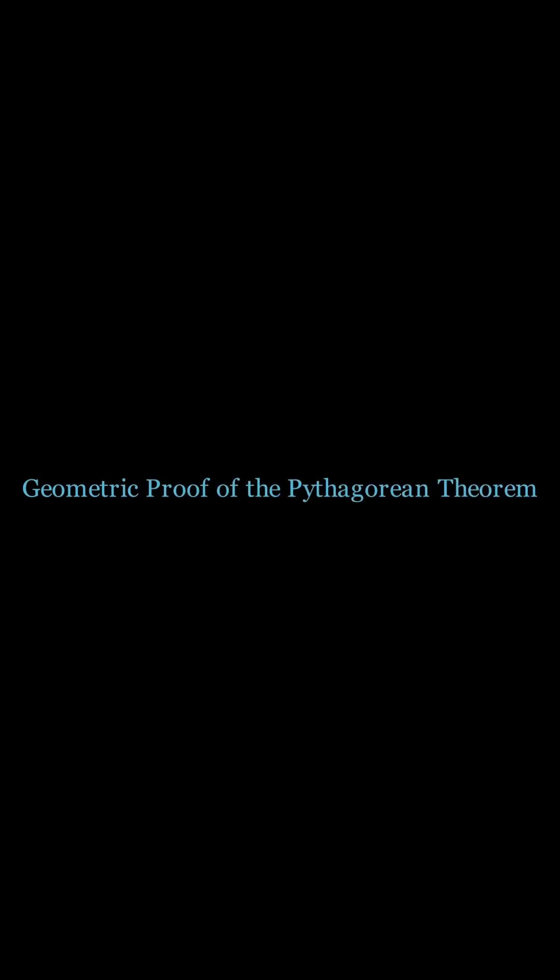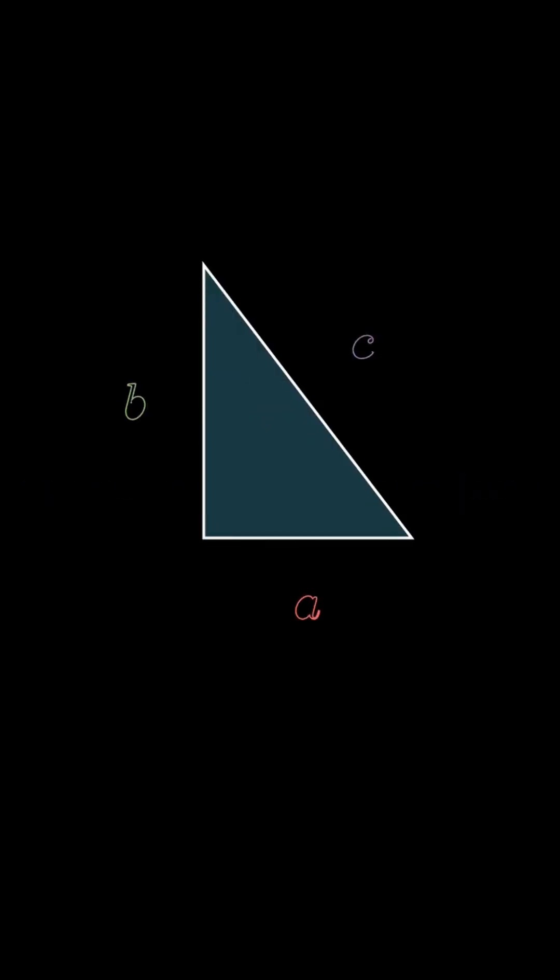This is how to prove the Pythagorean Theorem. Let's start with a right triangle with sides a, b, and c. We want to prove that a squared plus b squared equals c squared.